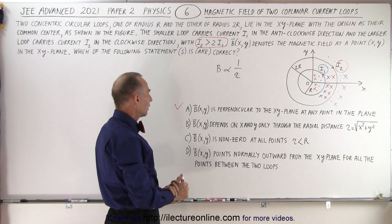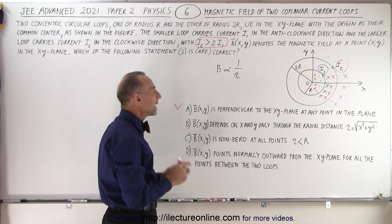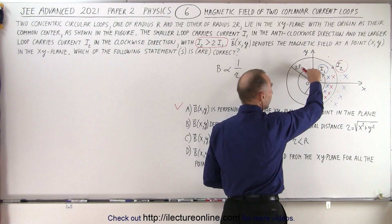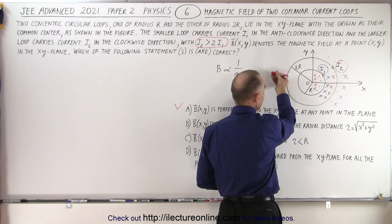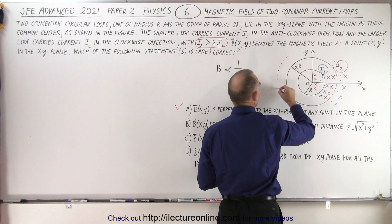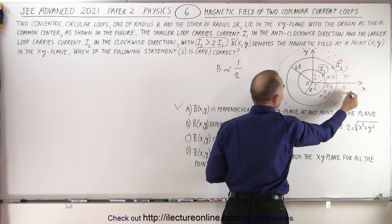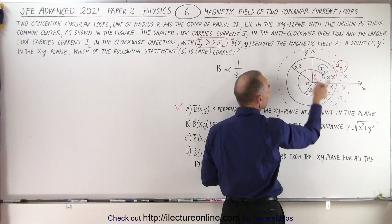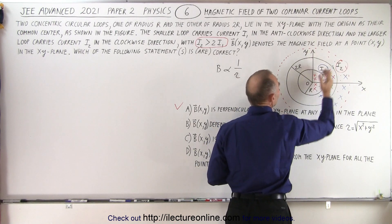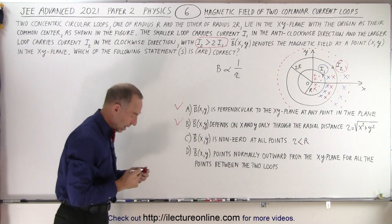For B, the magnetic field depends on X and Y only through the radial distance r. So the idea is, if we go out a certain distance r in any direction, will the magnetic field be the same along any circular, well, any circle, I should say, in the board? And the answer is yes. It doesn't matter what the XY is. It's simply the radial distance on either side of the current loops. So it looks like B is also a correct answer.